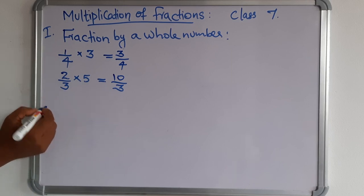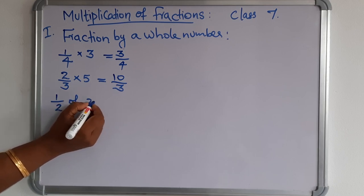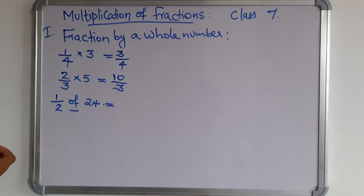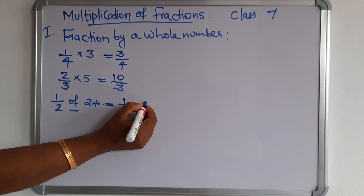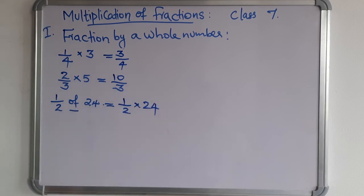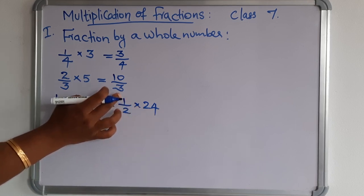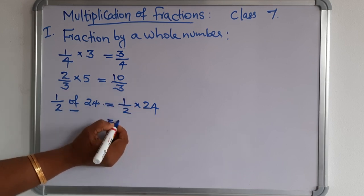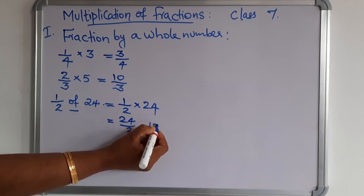Another example: how to find out half of 24. This type of question is there in the exercise. The word 'of' represents multiplication. So, half of 24 means it is the same as 1/2 × 24. Multiply the numerator with the whole number: 1 × 24 = 24, divided by 2. So the answer is 12.